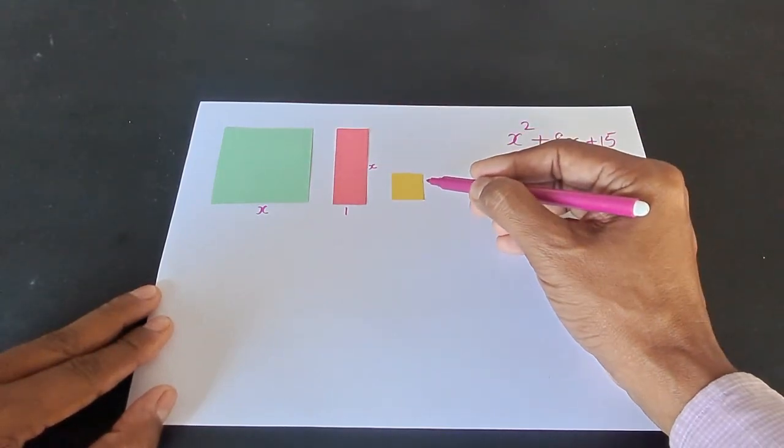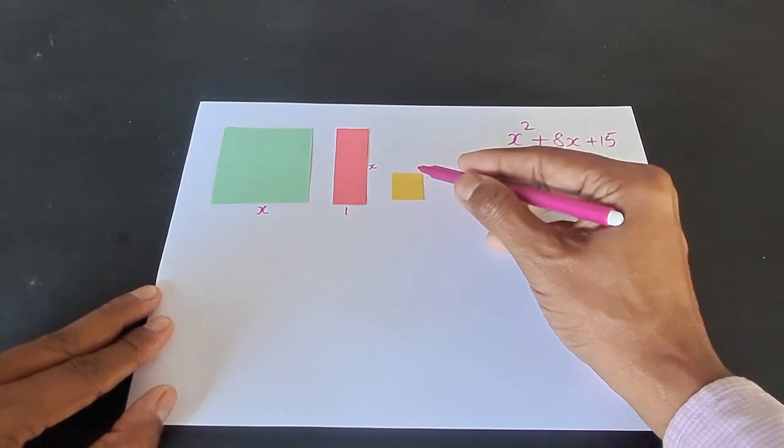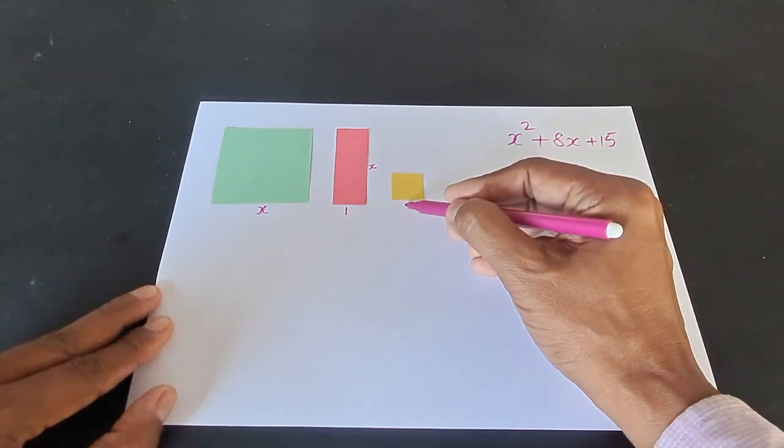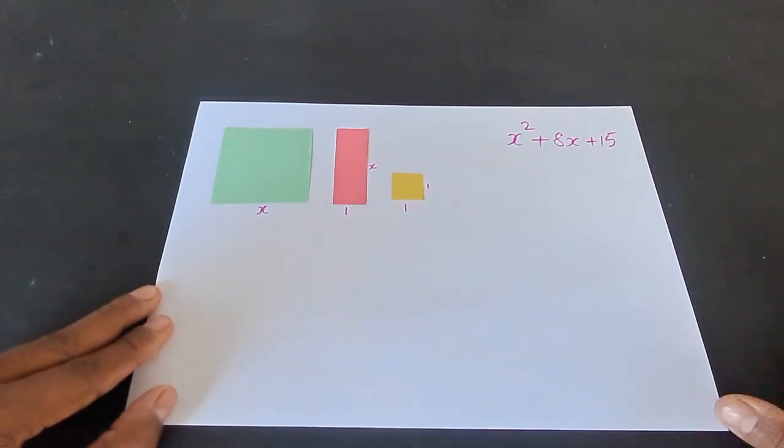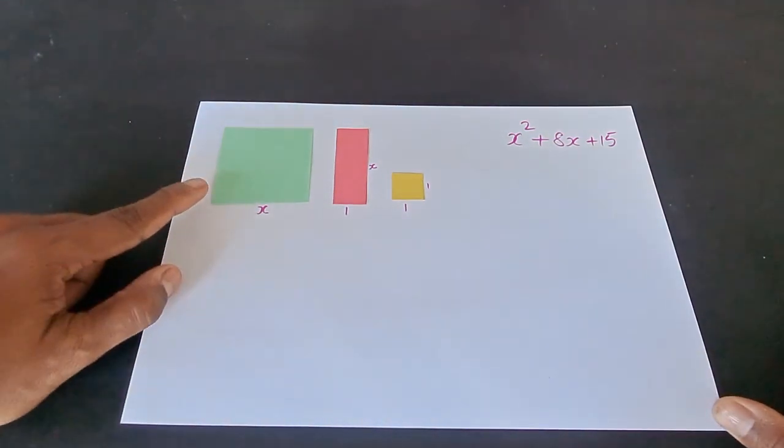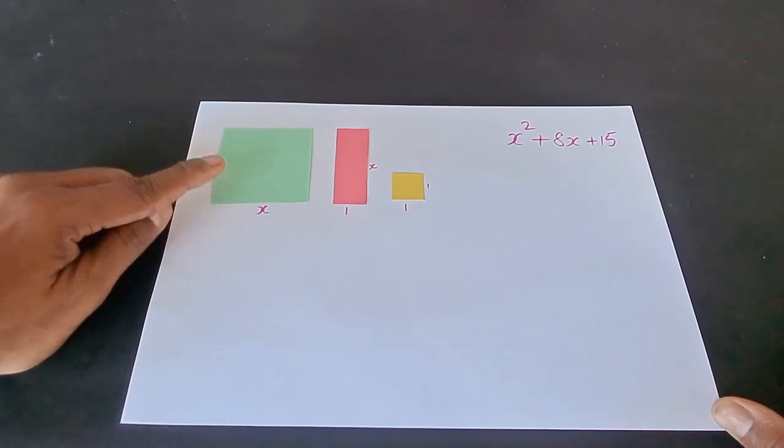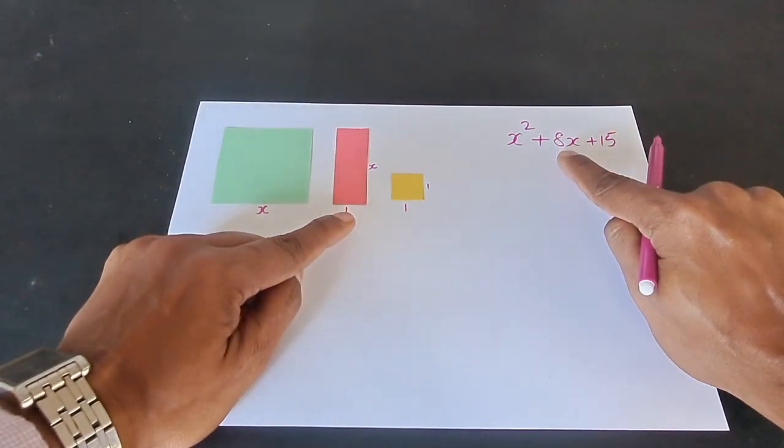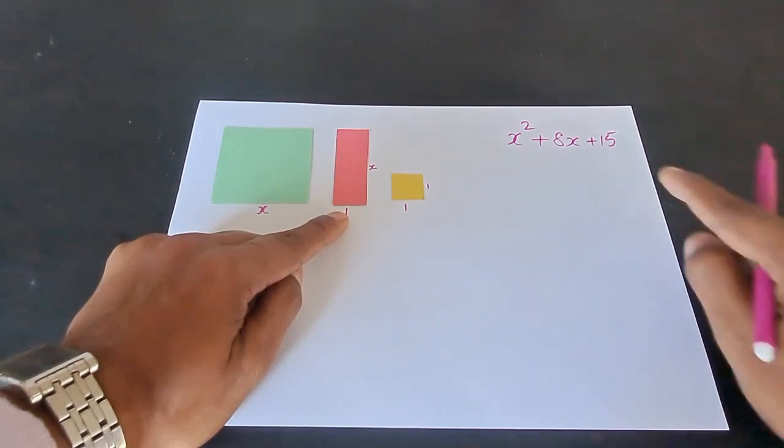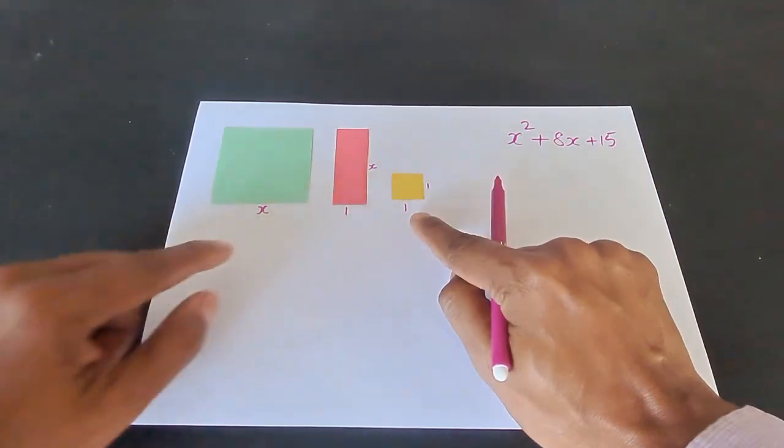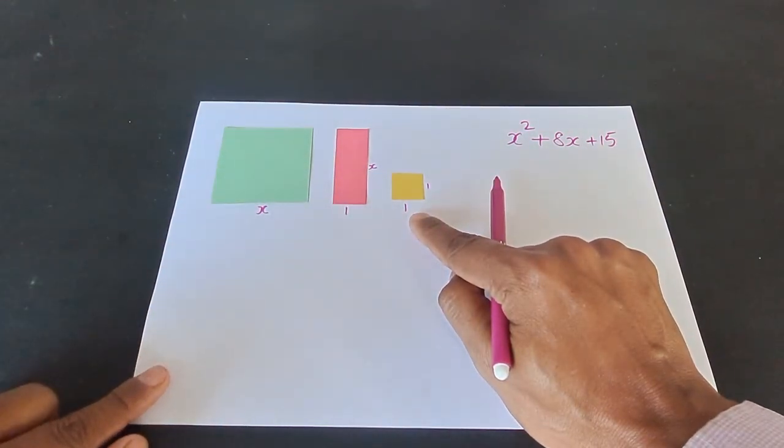Likewise, we need square cutouts of 1 unit each. So, these are the material required. We require a single cutout like this. We require 8 cutouts like this. And we require 15 cutouts like this. Now, we need to arrange all these cutouts in a particular pattern.